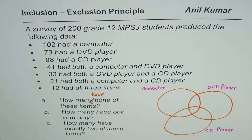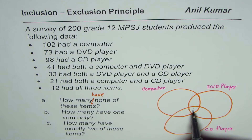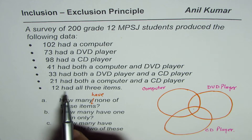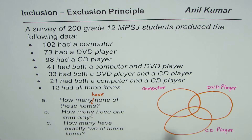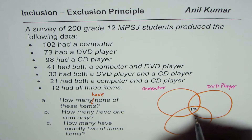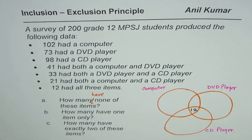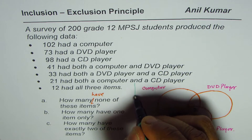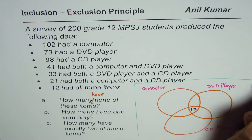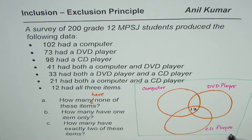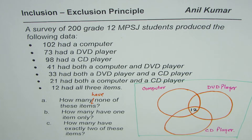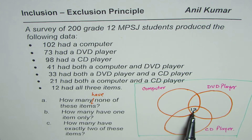Starting from the innermost region — 12 had all three items — so 12 goes in the center where all three circles overlap. These 12 students have a computer, a DVD player, and a CD player.